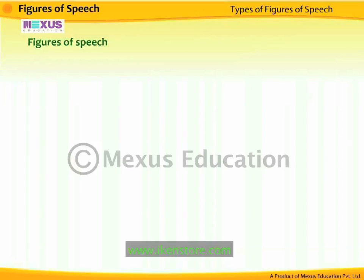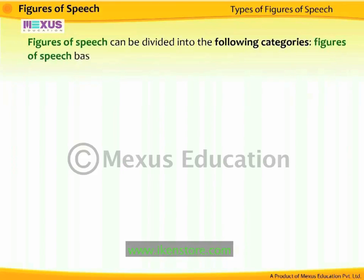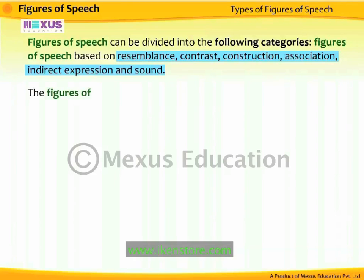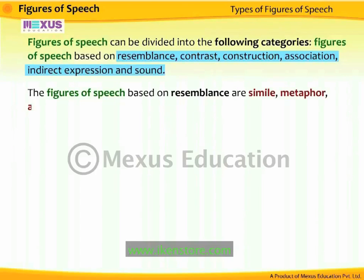Figures of speech can be divided into the following categories: figures of speech based on resemblance, contrast, construction, association, indirect expression, and sound. The figures of speech based on resemblance are simile, metaphor, allegory, personification, and apostrophe.